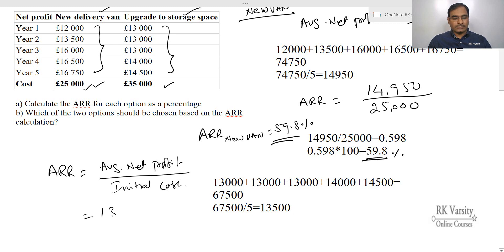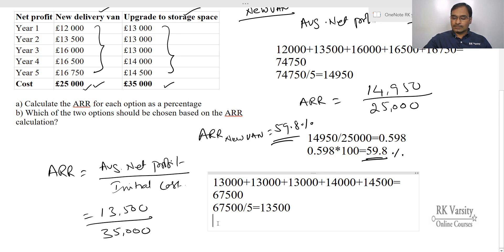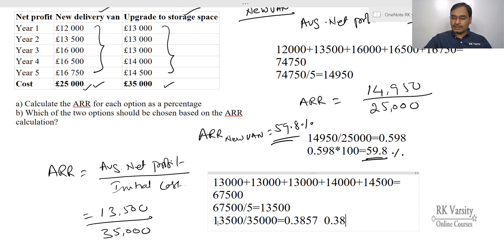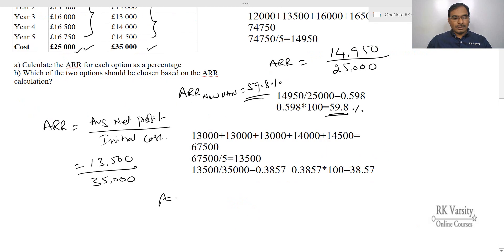The average net profit of £13,500 is divided by the initial cost of £35,000. This equals 0.3857, or in percentage terms 0.3857 times 100 equals 38.57%. The ARR of the upgrade of storage space is 38.57%.